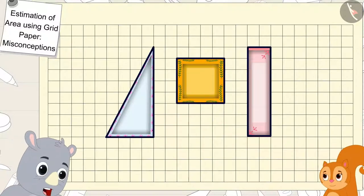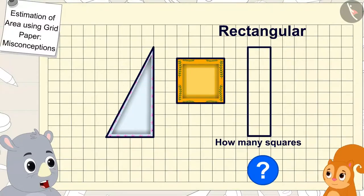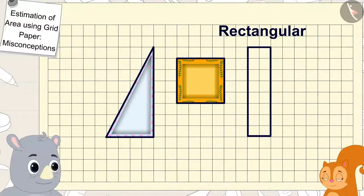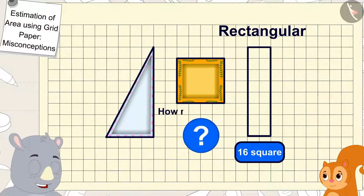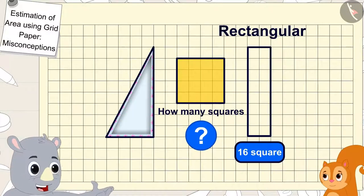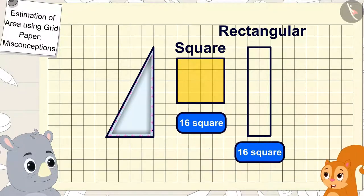Chanda, can you tell me how many squares are there in the area of the rectangular plate? Gaggoo asked Chanda. Chanda quickly counted. Sixteen squares. And how many squares are there in the area of the square shaped plate? Gaggoo asked. That's sixteen squares too. Chanda said shocked.